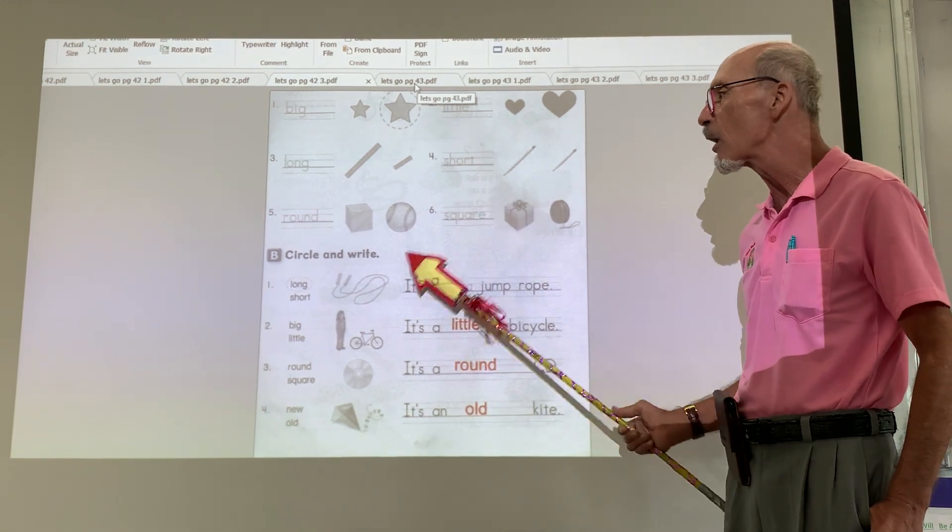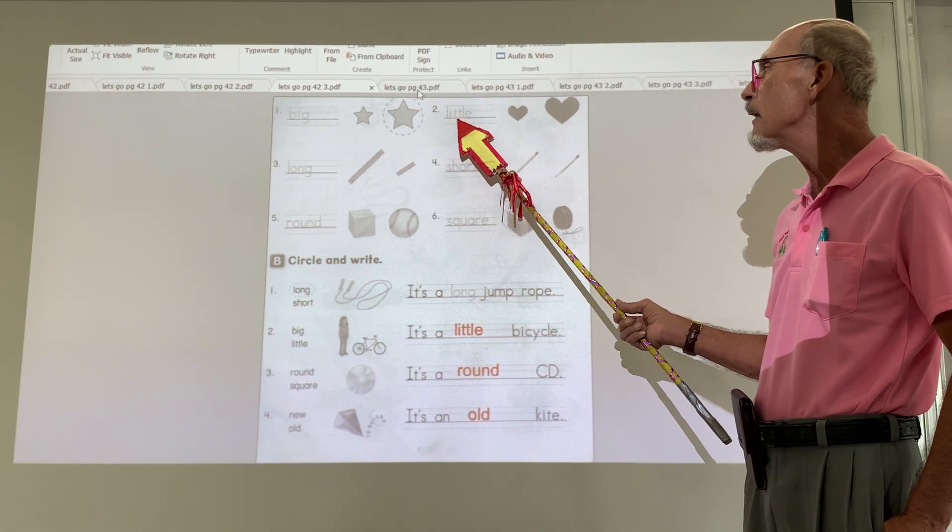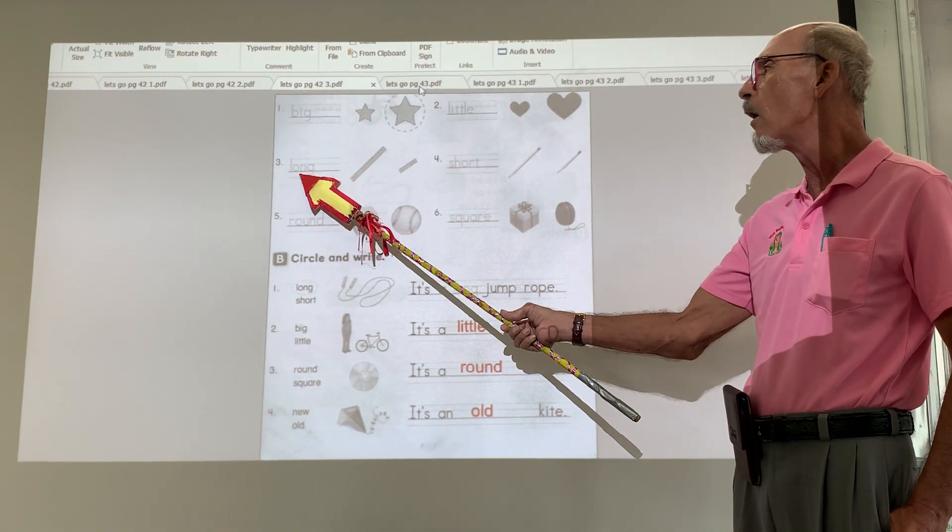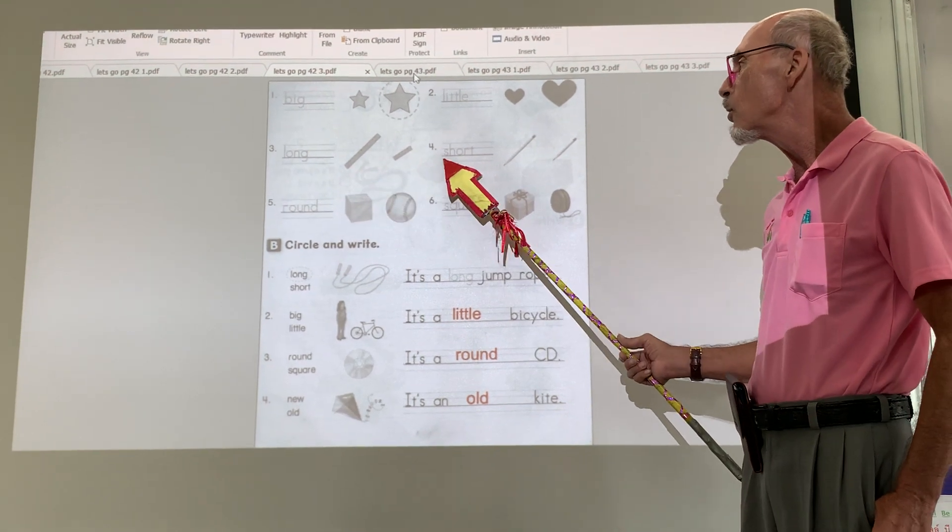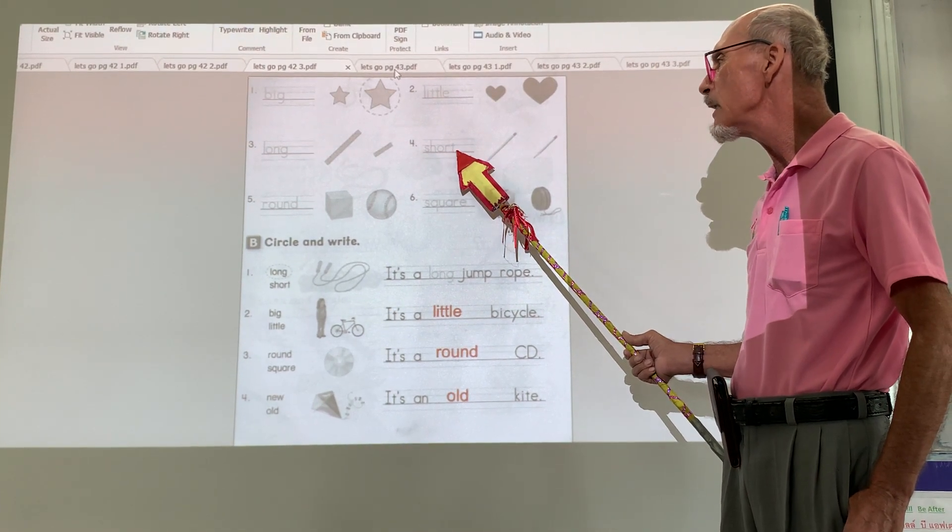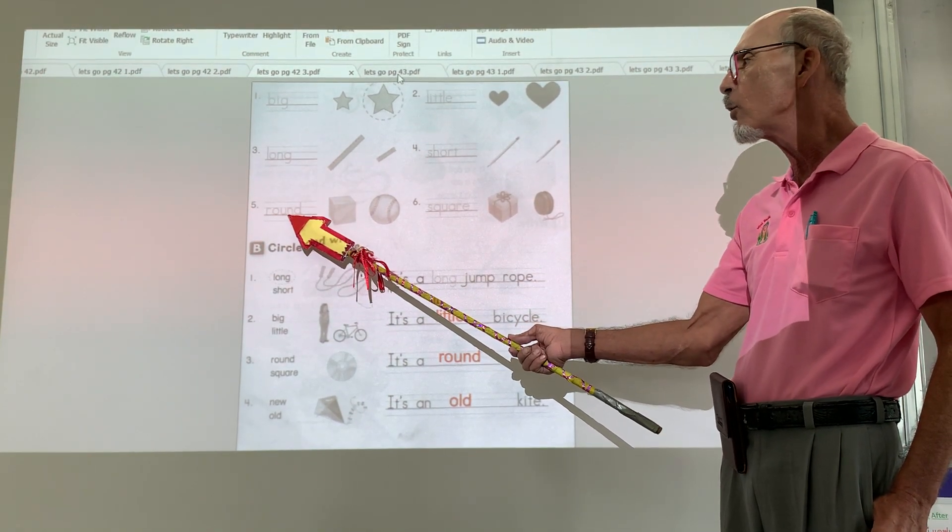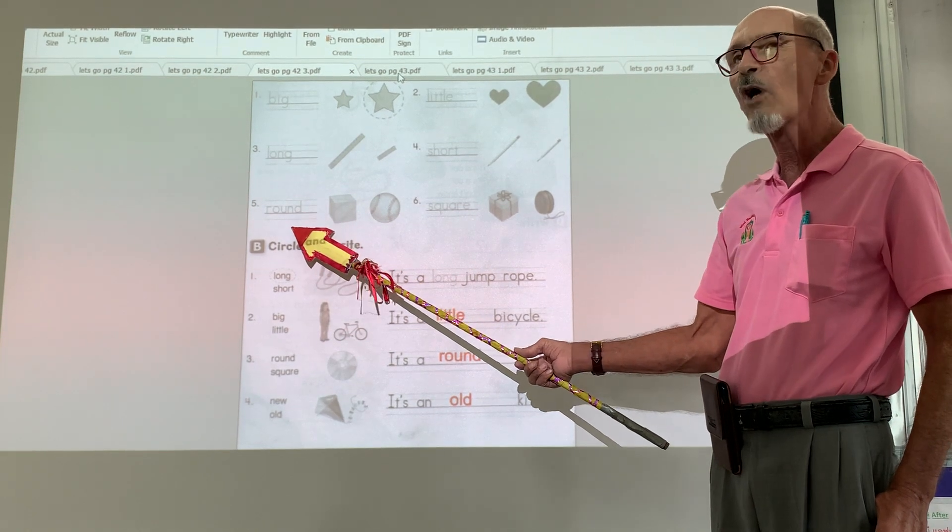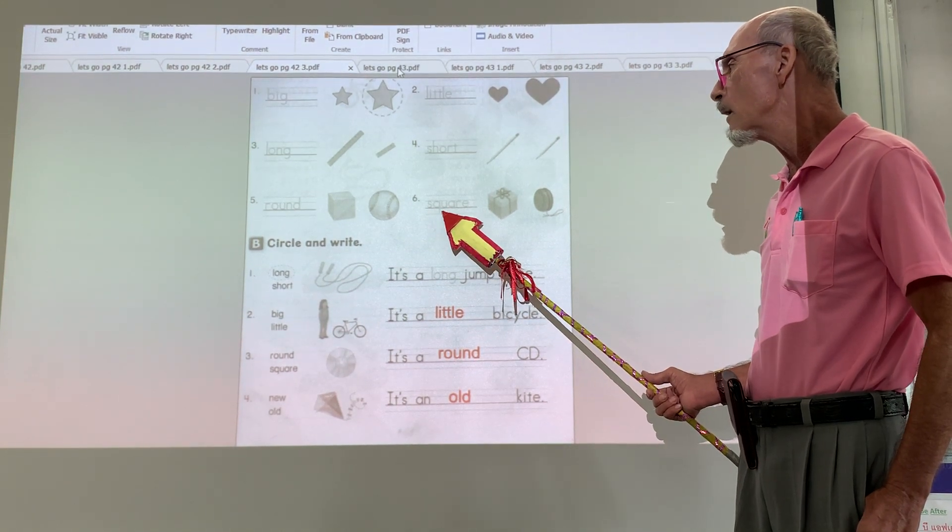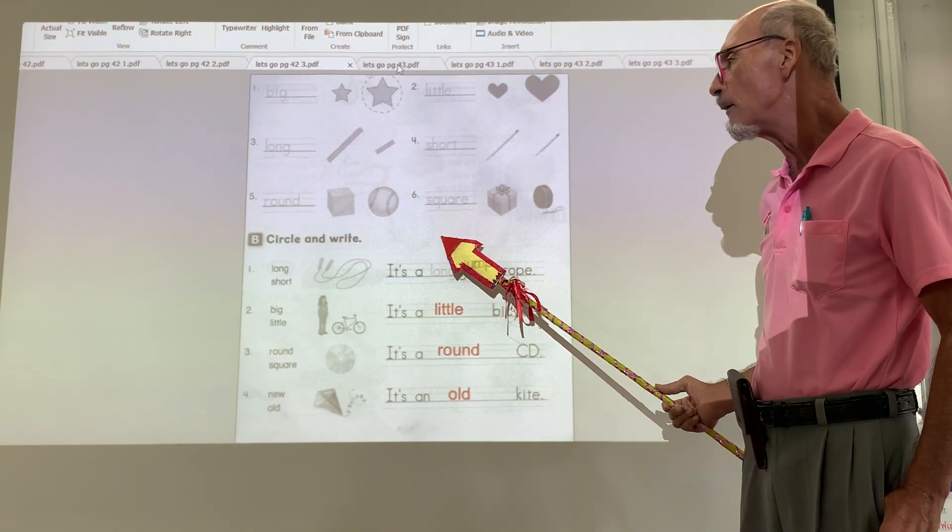Now, make sure you trace it in your book. Trace the words. B-I-G. L-I-T-T-L-E. Little. Long. L-O-N-G. Long. Short. S-H-O-R-T. Short. Round. R-O-U-N-D. Round. Square. S-Q-U-A-R-E. Square.